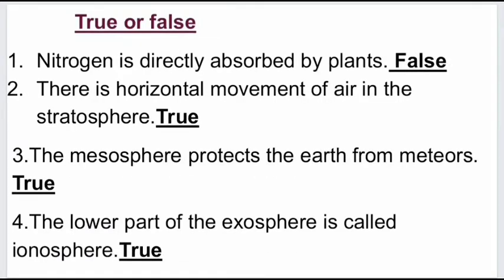Now we will see true or false. First: nitrogen is directly absorbed by the plants — False. Second: there is horizontal movement of air in the stratosphere — True. Third: mesosphere protects the earth from meteors — True. Fourth: the lower part of the exosphere is ionosphere — True.